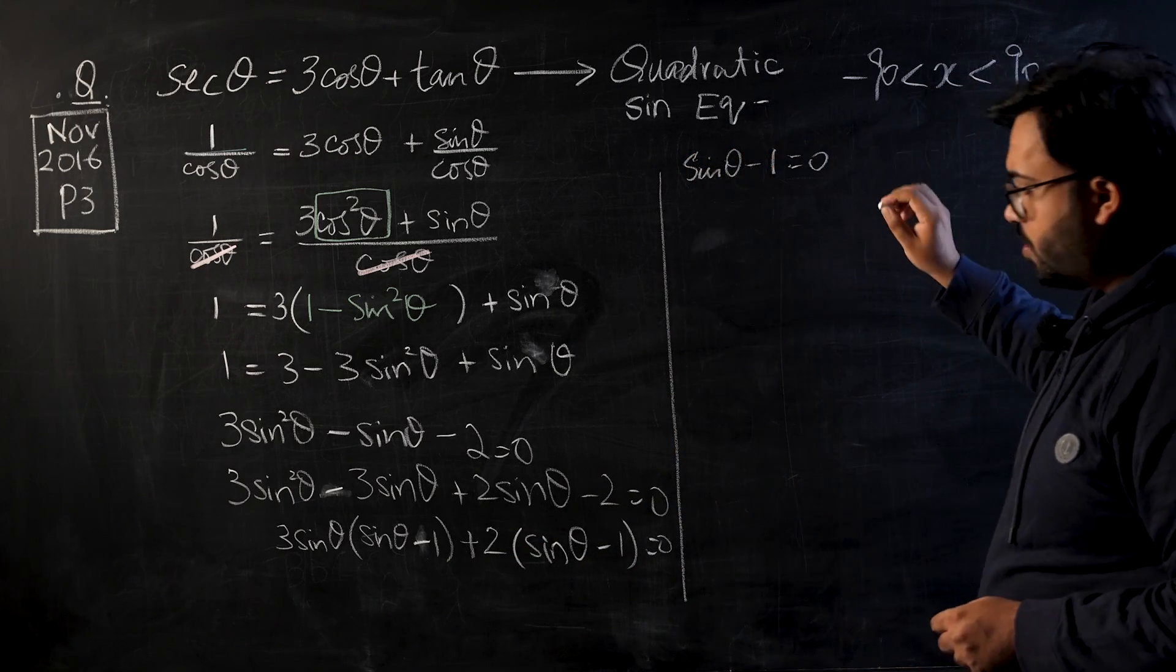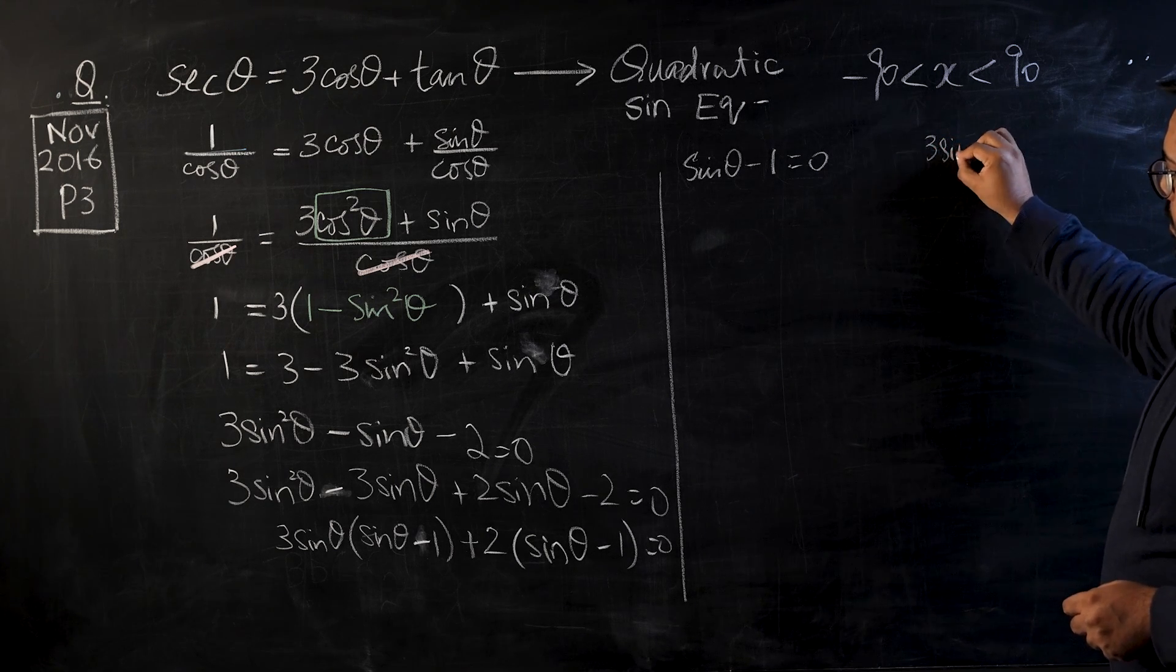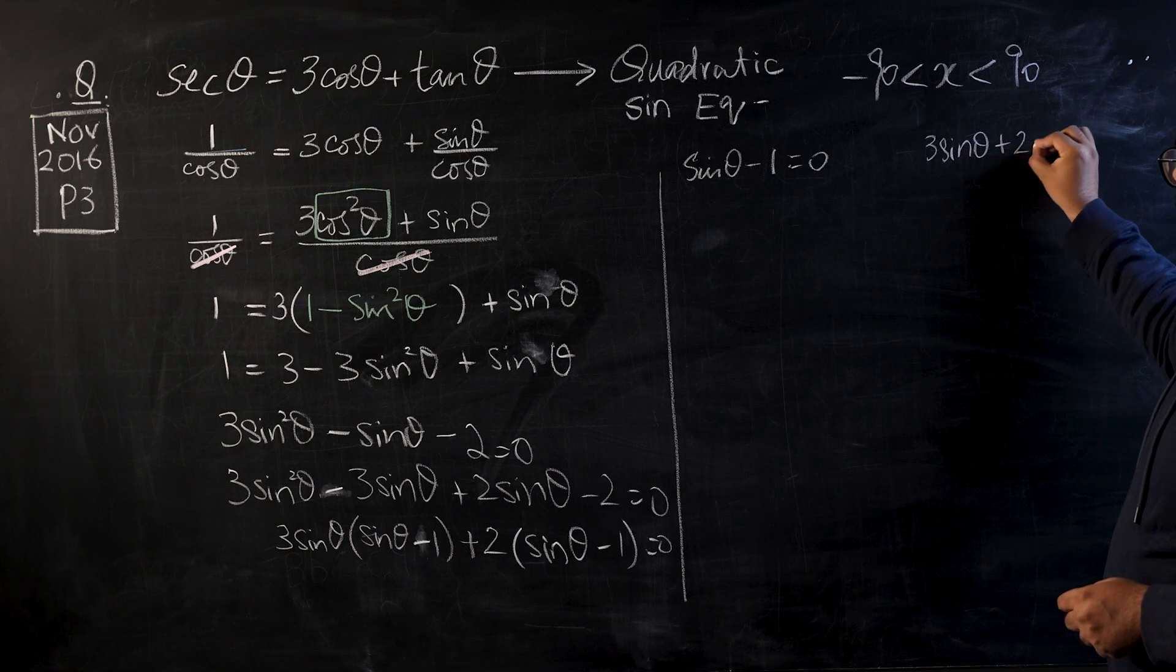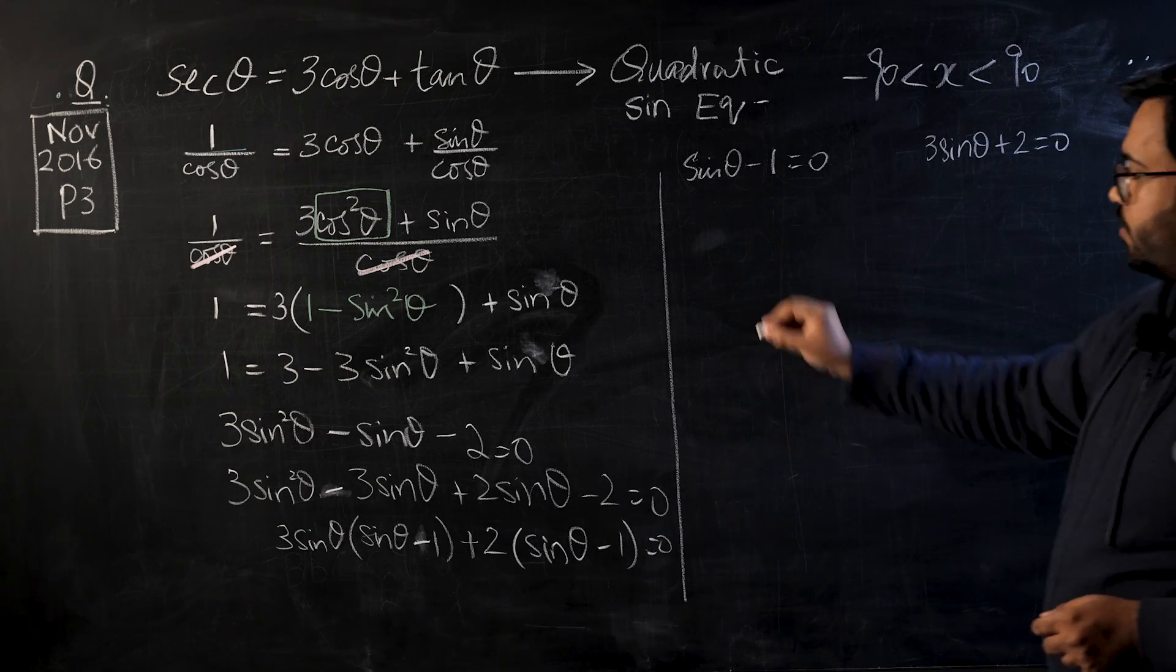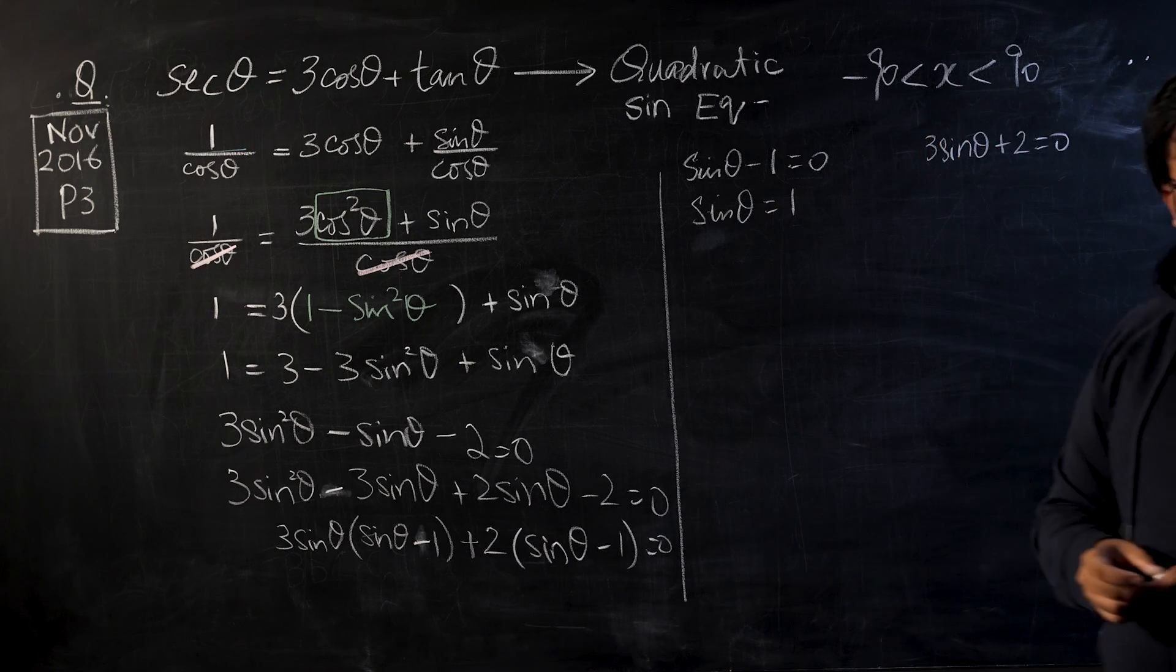So first, sin θ minus one, so I will say sin θ minus one equals zero, or I have 3 sin θ plus two equals zero.